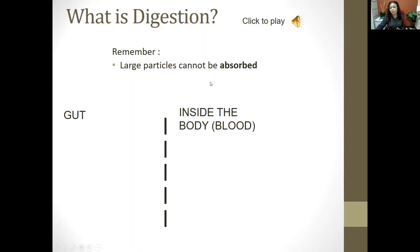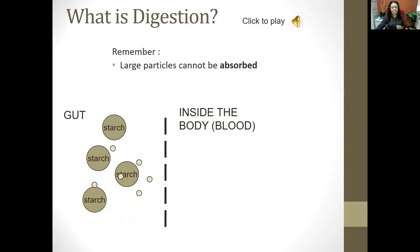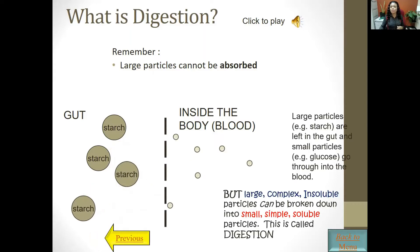Large particles cannot be absorbed in their original form. For example, starch is a carbohydrate — also a polysaccharide, meaning many sugar units joined together. Starch is too large and too complex for the body to absorb. Digestion breaks it down into its end product or simplest form, which is glucose. Glucose is small, simple, and easily absorbed by the blood. So starch stays in the gut, but glucose can enter the bloodstream.